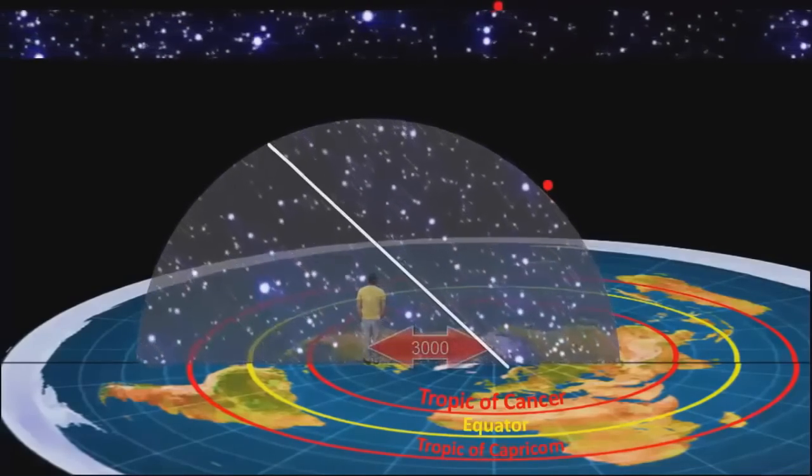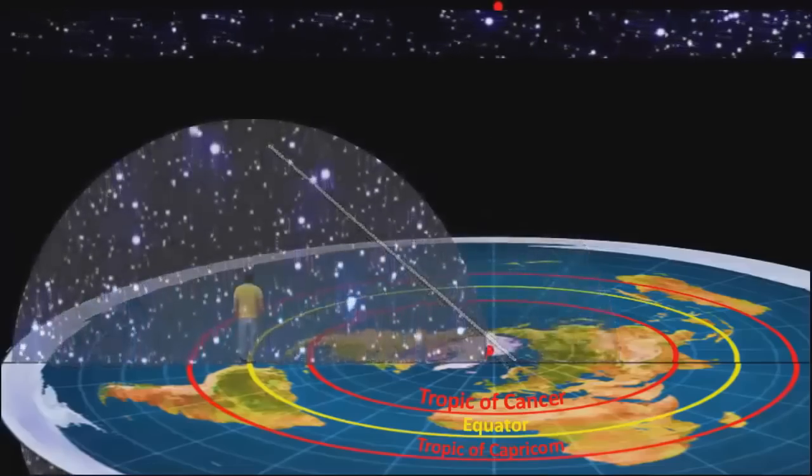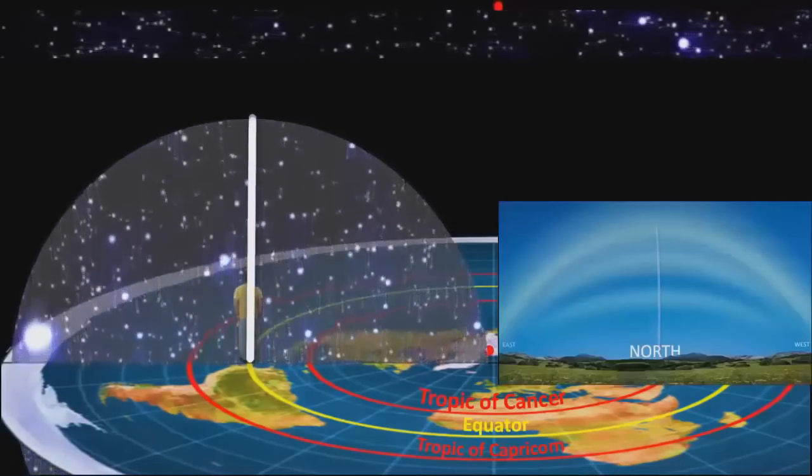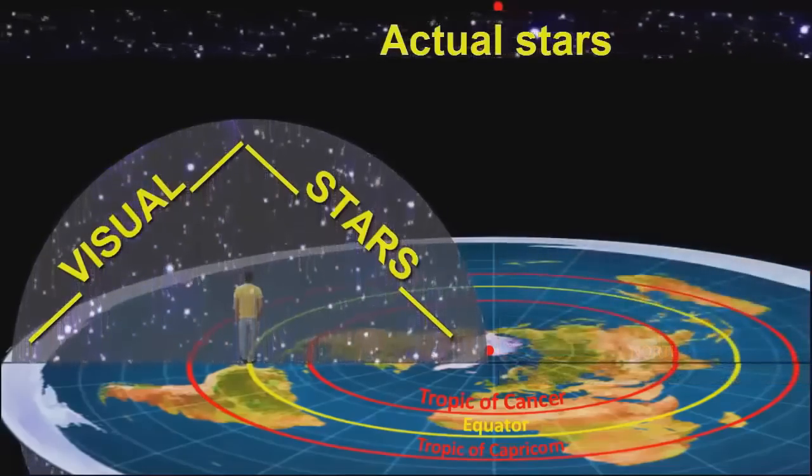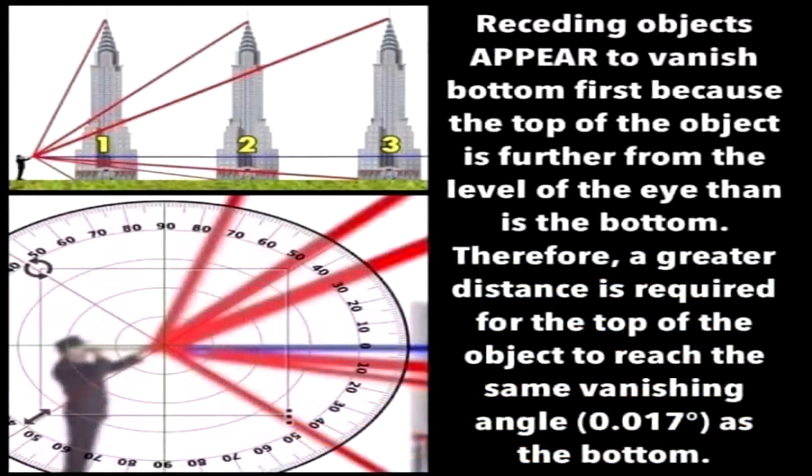This phenomenon has absolutely nothing to do with the supposed curvature of a globe, and everything to do with the Law of Perspective, which dictates that the angle and height at which an object is seen diminishes the farther one recedes from the object, until at a certain point the line of sight and the seemingly uprising surface of the Earth converges to a vanishing point, in this case the horizon line, beyond which the object becomes invisible.